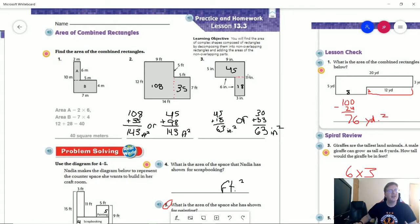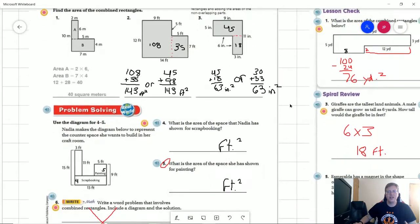For number 3, the way that I chose to do it was go across this way and so that gives me 45 square feet plus 18 square feet or sorry inches to get 63 square inches. The other way you could do it was to split it up this way and do 6 times 5 for this rectangle and 3 times 11 for this rectangle and again that would give us 30 plus 33 for a total of 63 square inches.